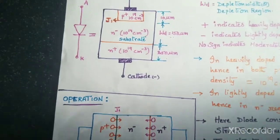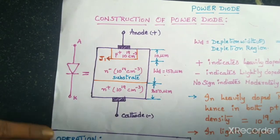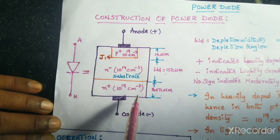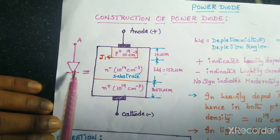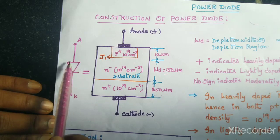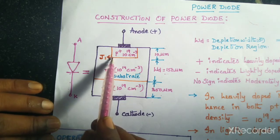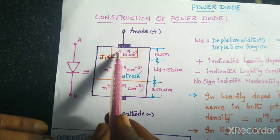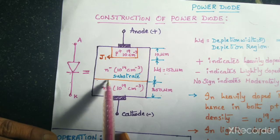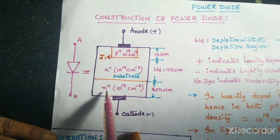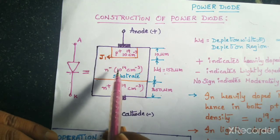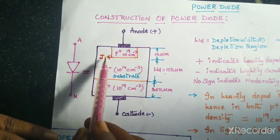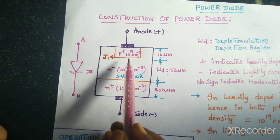This is about the construction of the power diode. Coming to operation, the diode is represented symbolically with anode and cathode terminals. There is only one junction — J1 — which is the junction between P type and N type semiconductor material. Even though we have increased the number of layers, there is only one junction, similar to a normal diode, because the junction is formed only between two different types of materials.